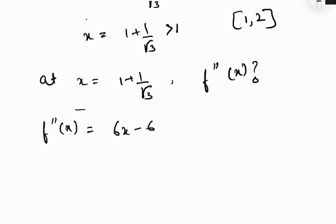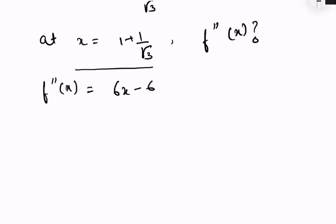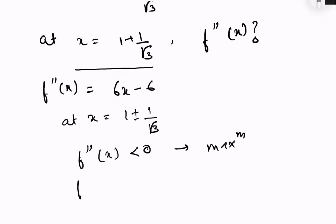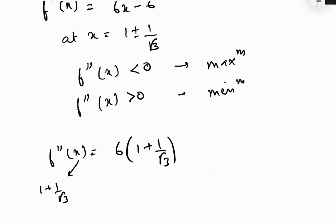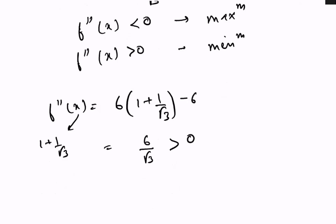Now let's find the double differential of f(x) to determine maxima or minima. We know the condition: if f double prime is less than zero at a point, it is a maxima; if f double prime is greater than zero, it is a minima. Evaluating f double prime at x equals 1 plus 1 upon root 3, we get 6 times (1 plus 1 upon root 3) minus 6, which is clearly greater than zero. So at x equals 1 plus 1 by root 3, it is a minima.